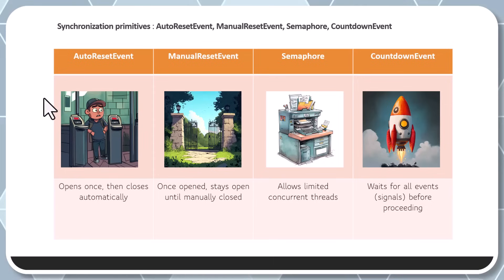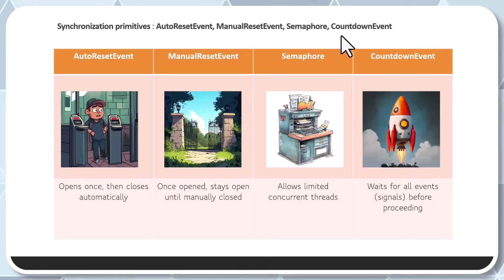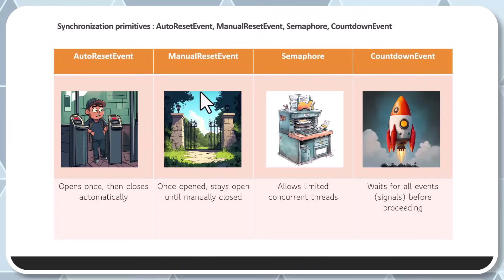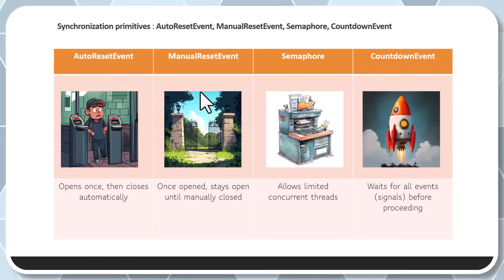So far we have looked at examples where we can use locks or interlocks to basically lock threads. But we have not encountered a scenario where we can signal other threads to basically acquire — 'now you are free to acquire.' So we have other synchronization primitives like AutoResetEvent, ManualResetEvent,